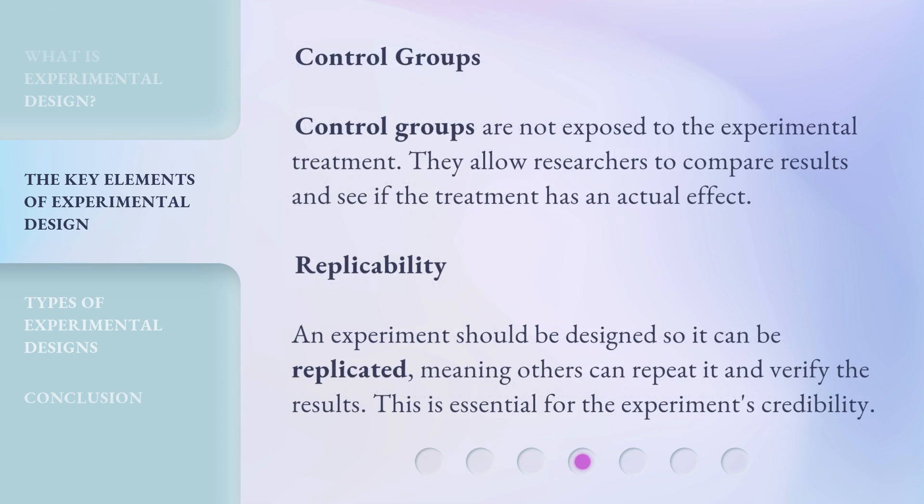Control groups. Control groups are not exposed to the experimental treatment. They allow researchers to compare results and see if the treatment has an actual effect. Replicability. An experiment should be designed so it can be replicated, meaning others can repeat it and verify the results. This is essential for the experiment's credibility.